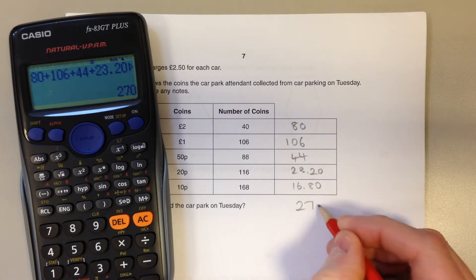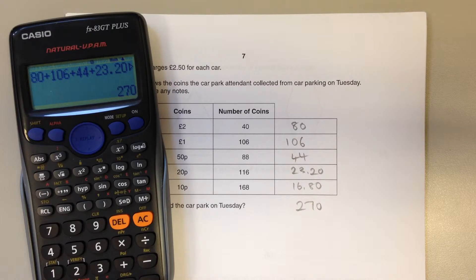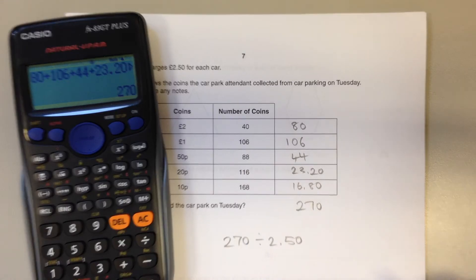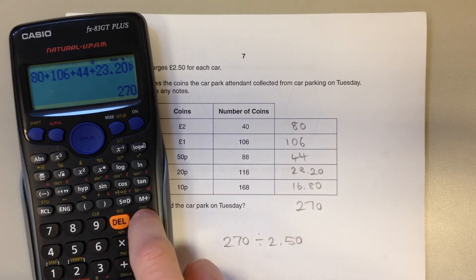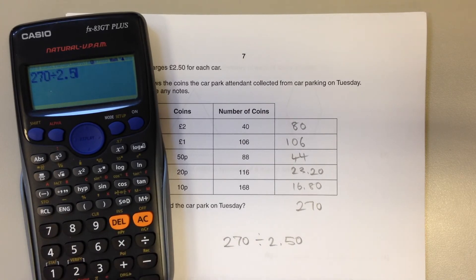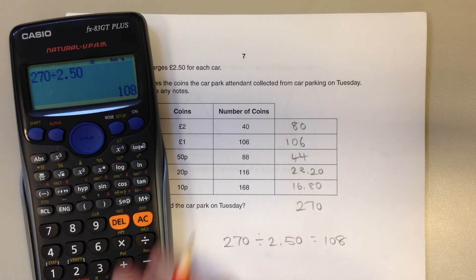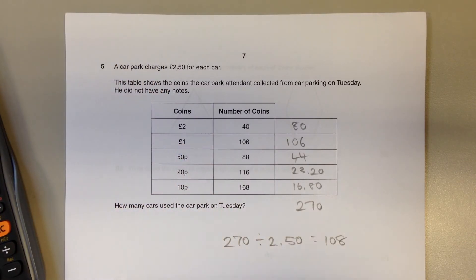Gives you a total of £270 collected altogether on Tuesday. If each car paid £2.50, then how many lots of £2.50 make up £270? That's 108 lots of £2.50, so that must be 108 cars.